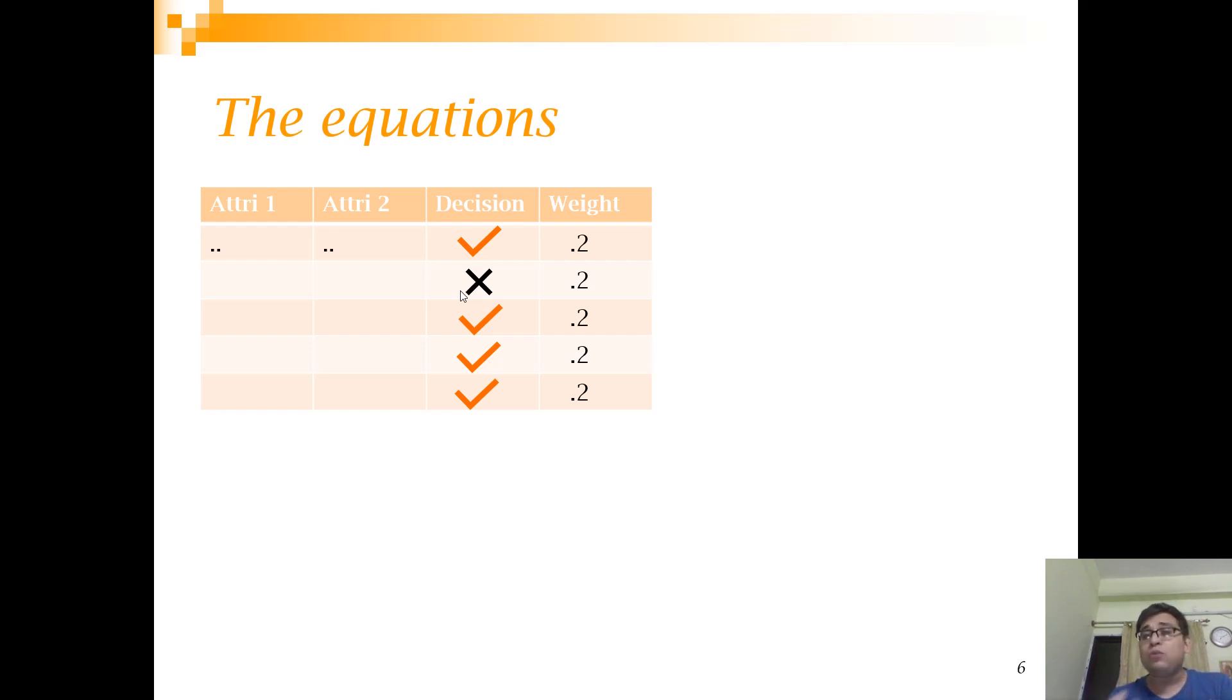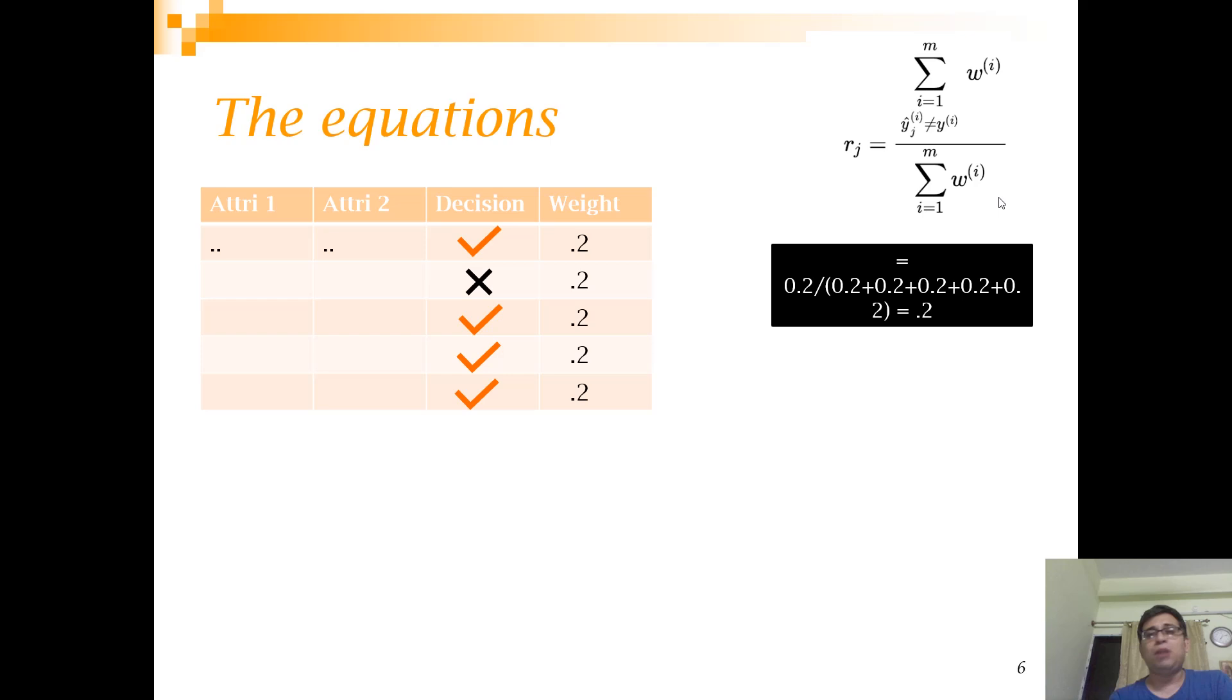How do I calculate the misclassification rate? Normal misclassification would give us 1 by 5. But in boosting we use a weight, so that weight is used in both the numerator and denominator calculation. In the numerator you have the misclassifications where yj dash (the prediction) is not equal to yi, and below you have the weight of all training observations. So essentially this is your weighted misclassification. In our case it's 0.2 by 1, which is 0.2.